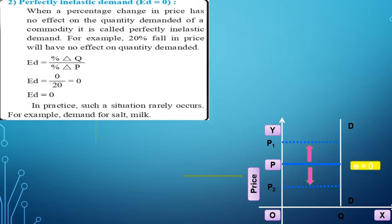The next type is perfectly inelastic demand, where the elasticity of demand equals zero. When a percentage change in price has no effect on the quantity demanded of the commodity, it is called perfectly inelastic demand. For example, if there is a 20% fall in the price of a commodity but there is no change in the quantity demanded, the elasticity of demand in such a case is equal to zero.